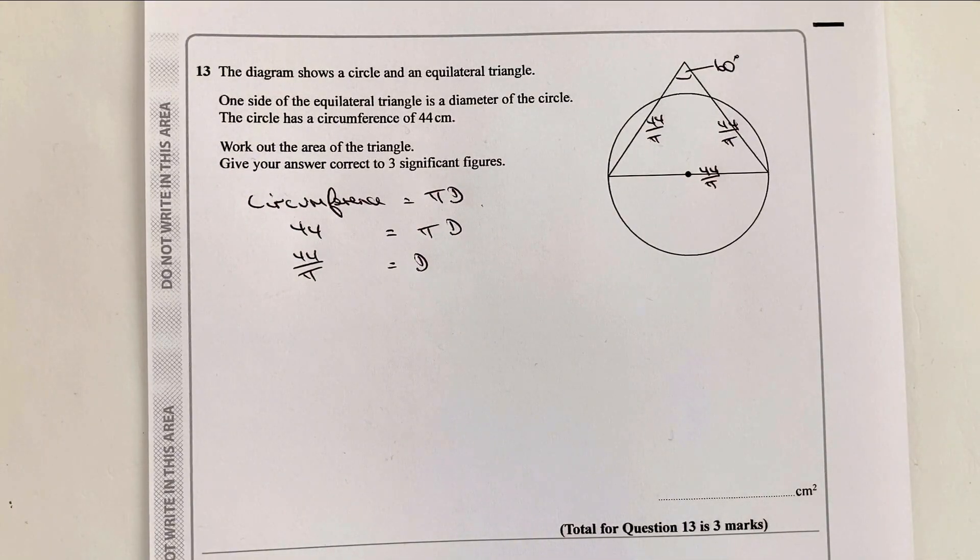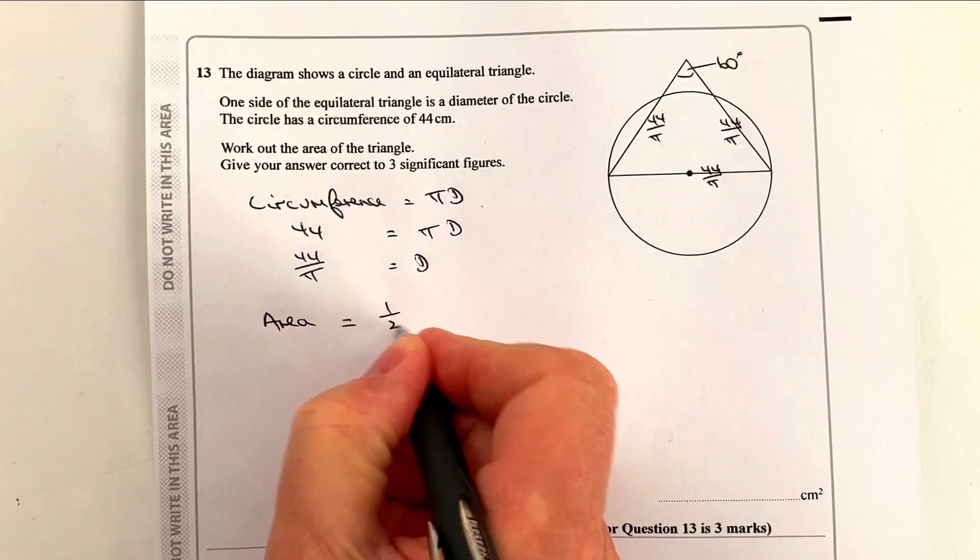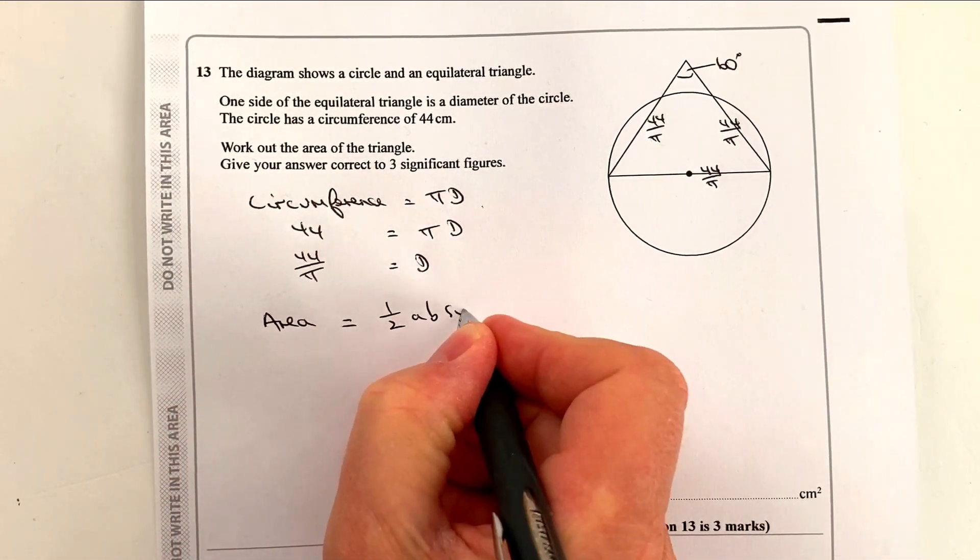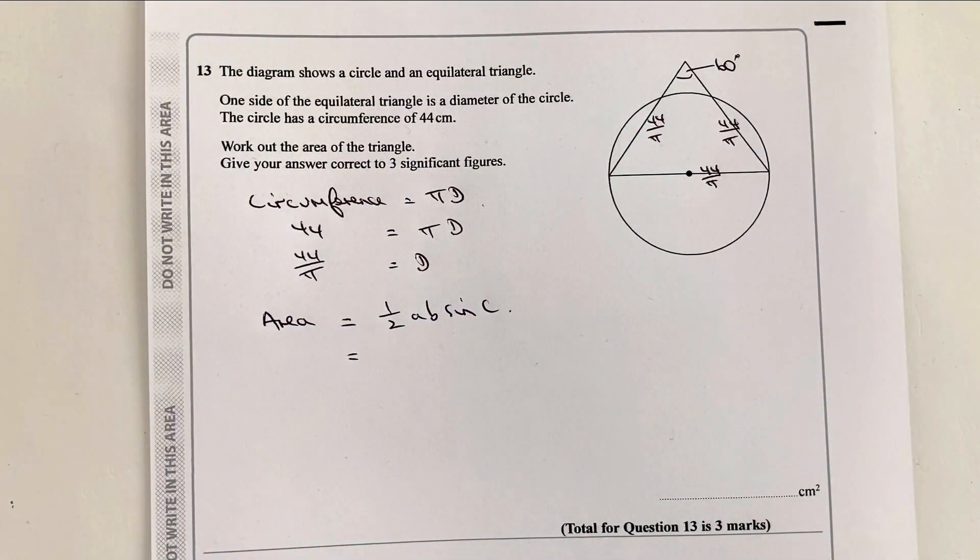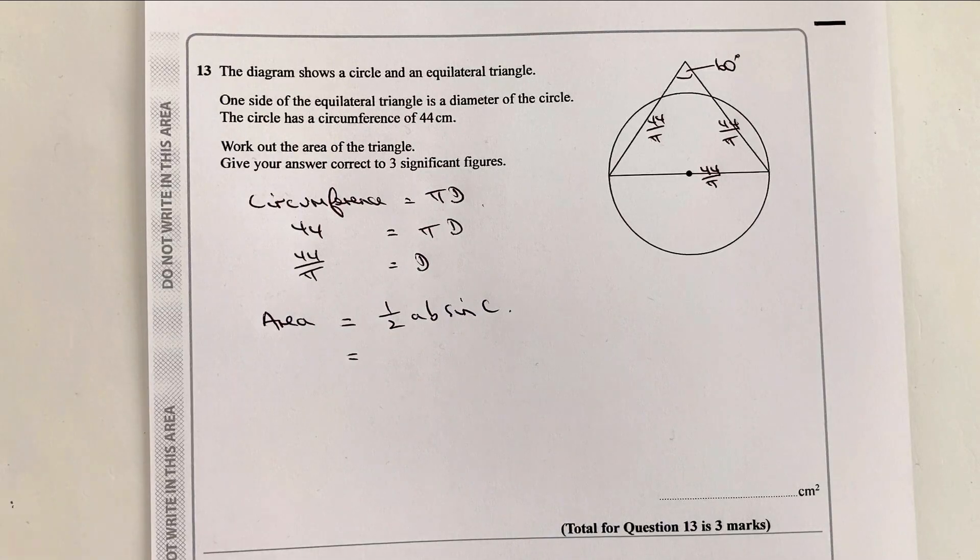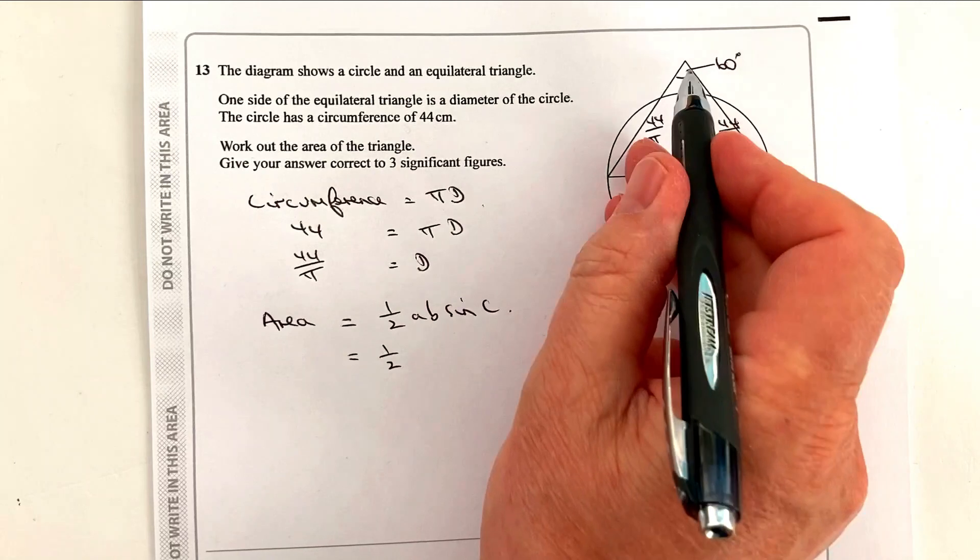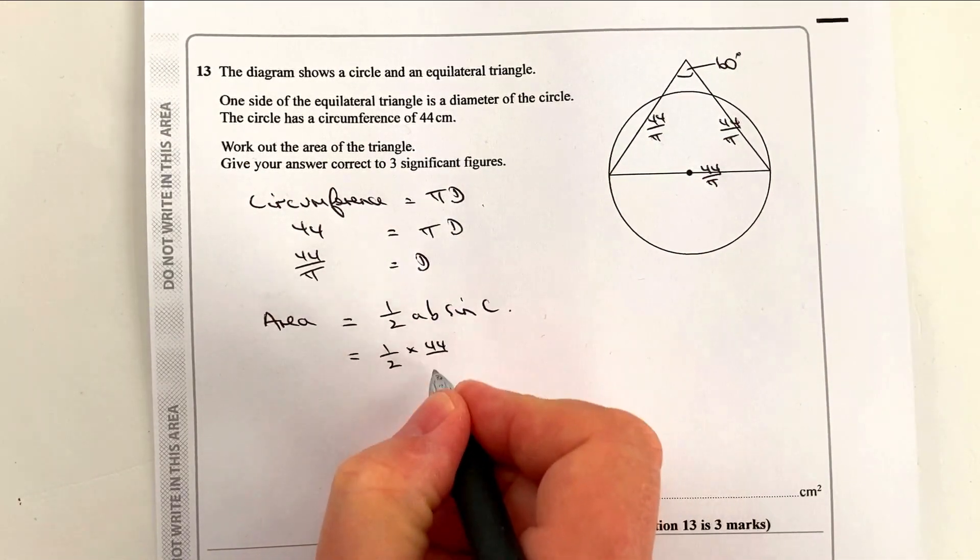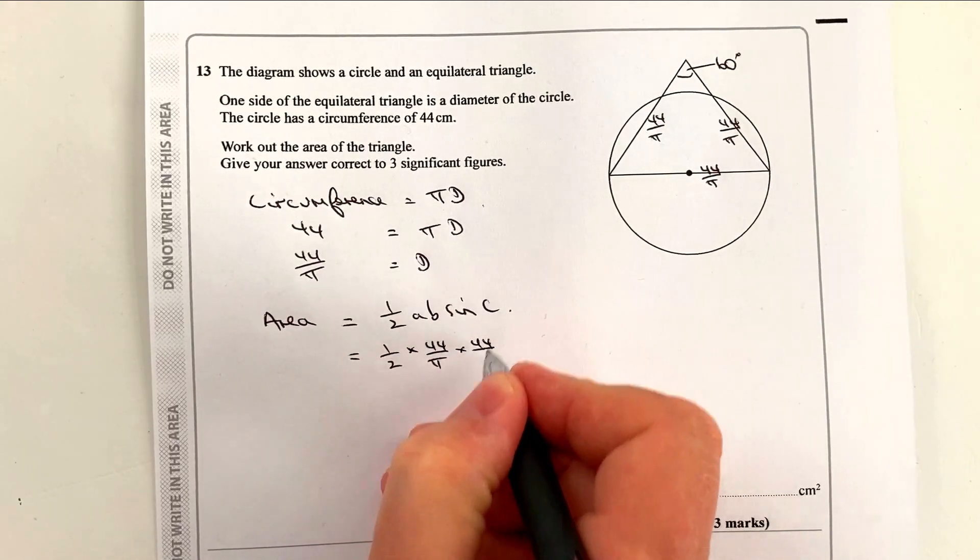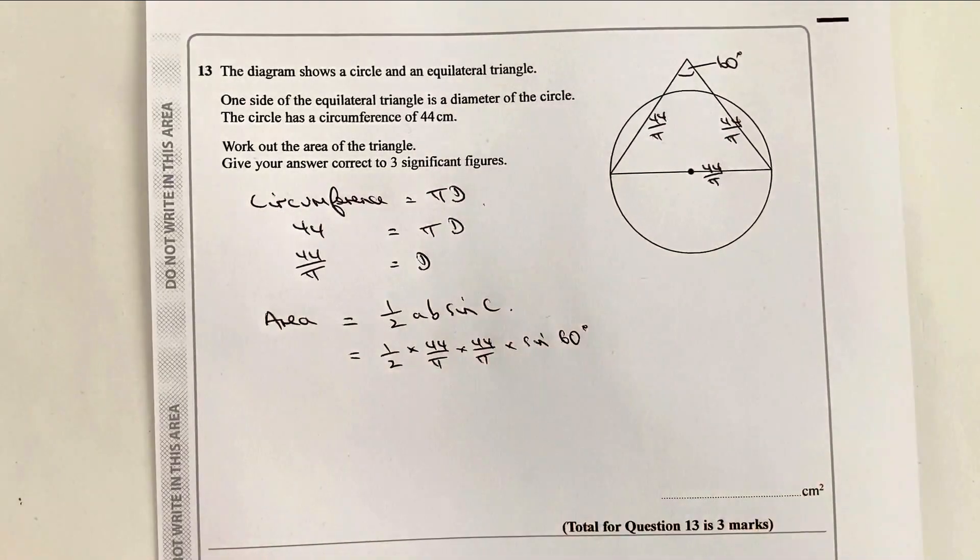So we need to work out the area. One of the formulas that you will come across, particularly at the higher tier, is going to be that the area of a triangle is a half a b sine c. We can now use this information and plug it directly into the formula because we know that a is going to be one of these sides. It's an inclusive formula. So we just say, well, it's multiplied by 44 over pi, which is one side, times 44 over pi, which is another side, multiplied by the sine of 60 degrees.